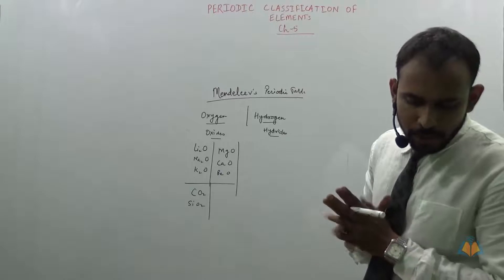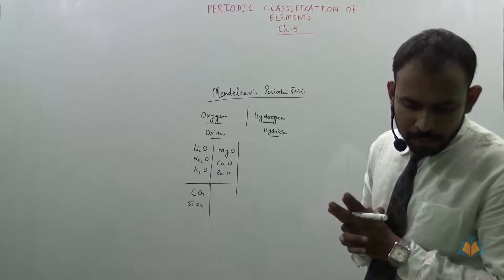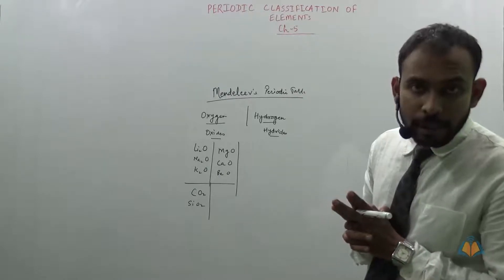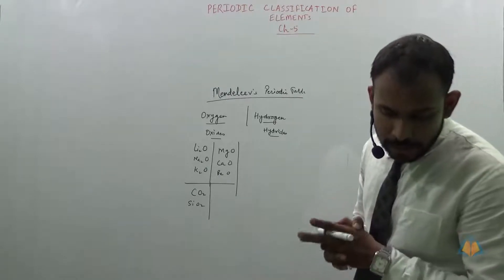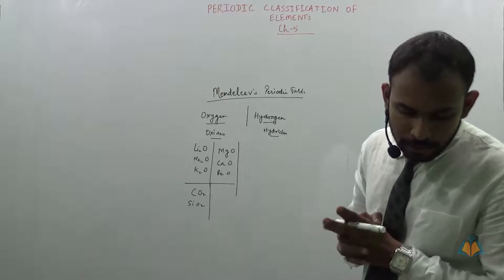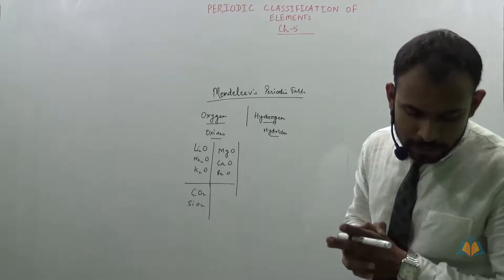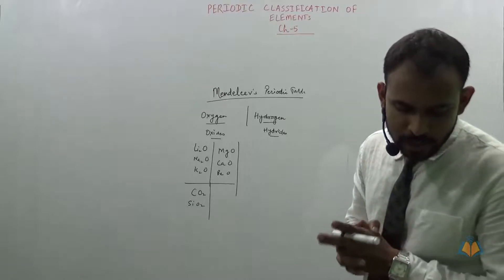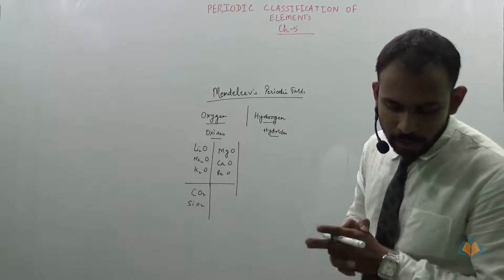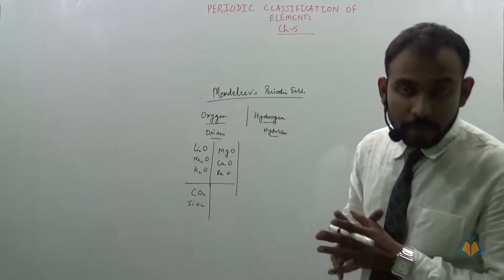The statement of Mendeleev's periodic table is: when elements are arranged in order of increasing atomic masses, the elements with similar properties occur at regular intervals.